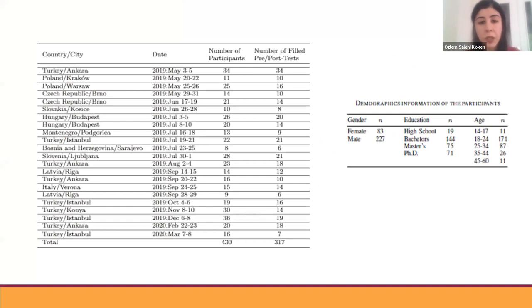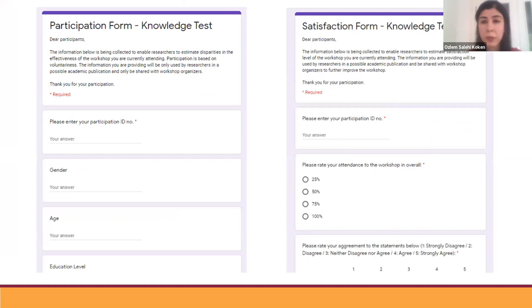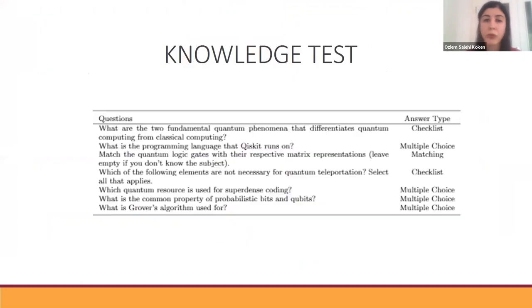Here you'll see the list of workshops from which we use the data. On the right-hand side, you'll see demographics of the participants joining the workshops. Filling those forms is not mandatory, and only people who volunteered filled those forms. Here you'll see a screenshot of the forms: participation and satisfaction forms. In the participation form, we also asked some demographic information such as gender, age, and education level. Both forms contain this knowledge test. We asked some basic questions. Here we are measuring the lowest level of learning, which is called knowledge according to Bloom's taxonomy. We are just measuring basic knowledge retention with those questions.